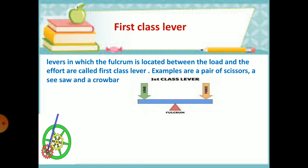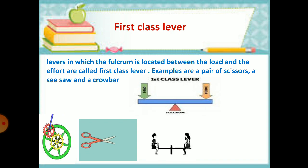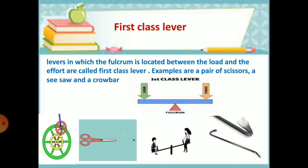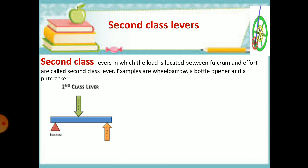First class lever. Levers in which the fulcrum is located between the load and the effort are called first class lever. Examples are pair of scissors, a seesaw, and a crowbar.